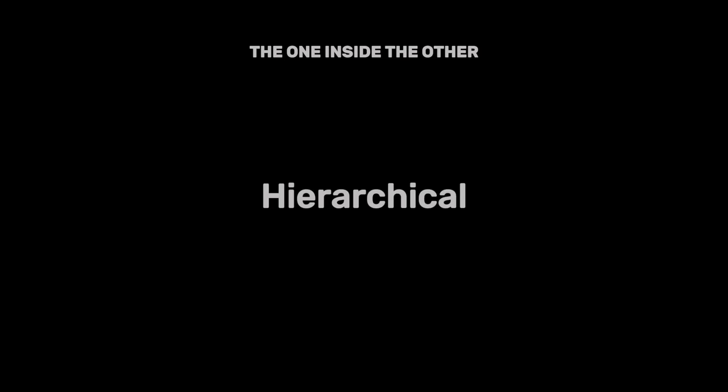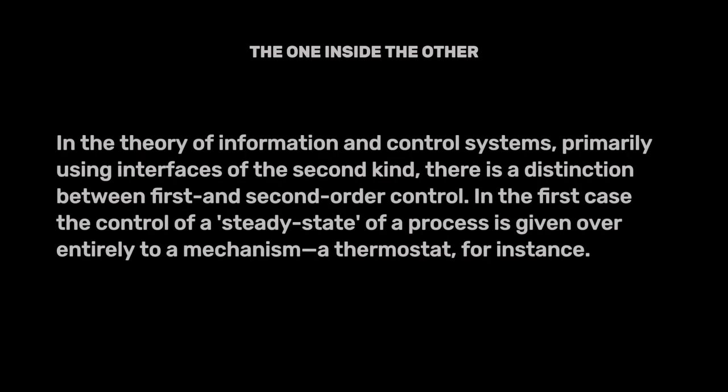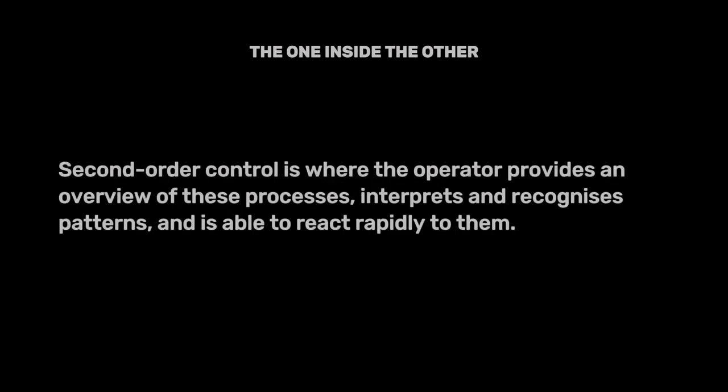The hierarchical nature of control in interfaces is another aspect to consider. Systems can have first-order control — the automatic processes — and second-order control — the human oversight. This distinction mirrors the layered complexity of interfaces and their control mechanisms. In the theory of information and control systems, primarily using interfaces of the second kind, there is a distinction between first- and second-order control. In the first case, control of a steady state of a process is given over entirely to a mechanism — a thermostat, for instance. Second-order control is where the operator provides an overview of these processes, interprets and recognizes patterns, and is able to react rapidly to them.